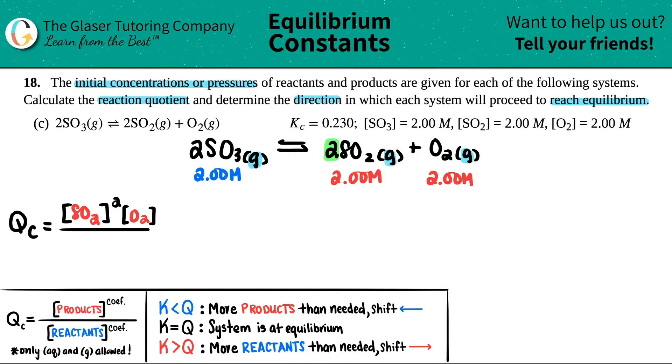So, the O2 comes next. I close the bracket. But now, for O2, I don't see a coefficient. Remember, that means that you only have one of them, so you can raise this to the first, but you don't have to. Anything raised to the first is itself. And then coming down to the bottom, I have SO3. Close that bracket. I do see that there's a 2 here, so I got to raise it to the second.